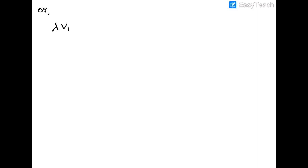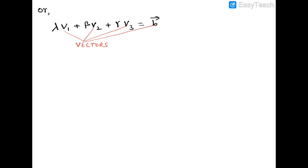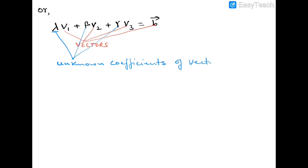So: λv1 + βv2 + γv3 = vector b, where v1, v2, v3, and b are vectors, and λ, β, and γ are unknown coefficients or scalars.